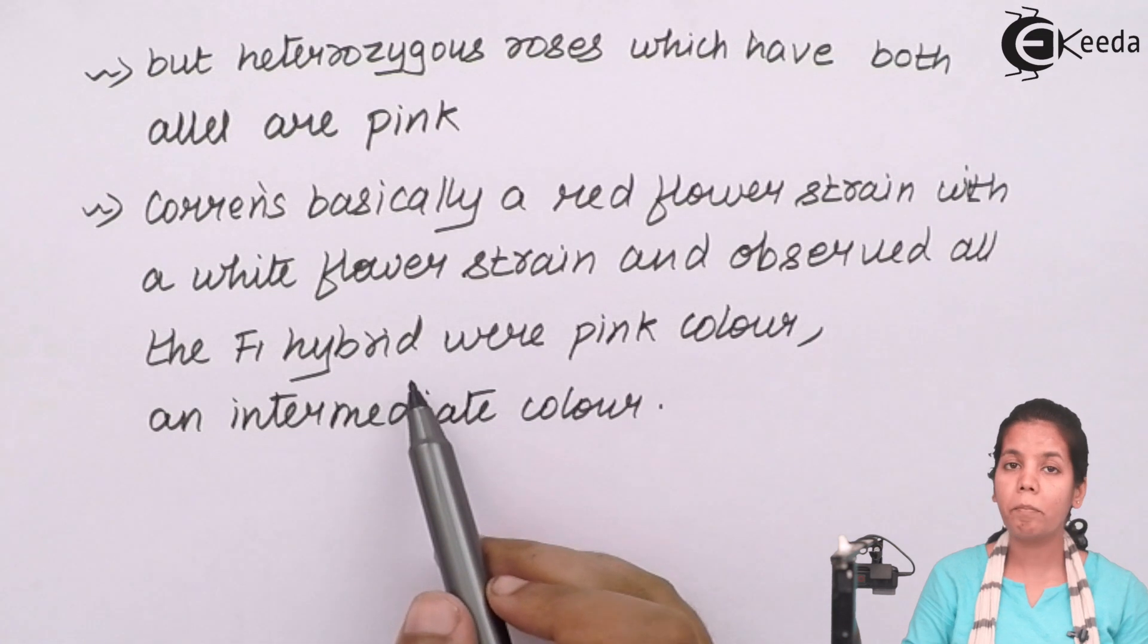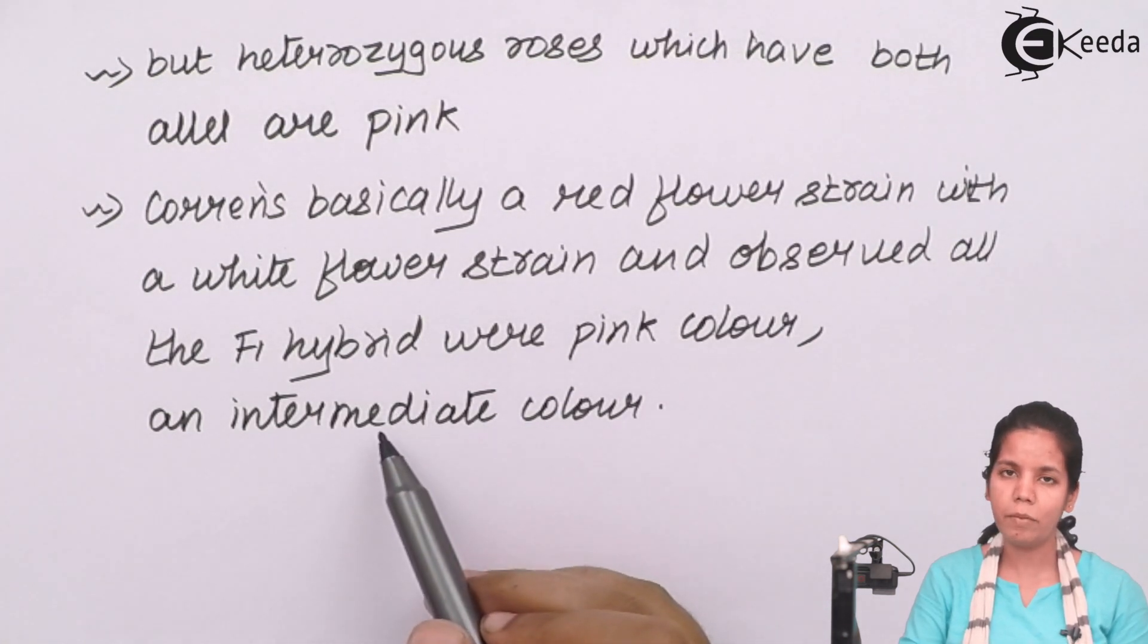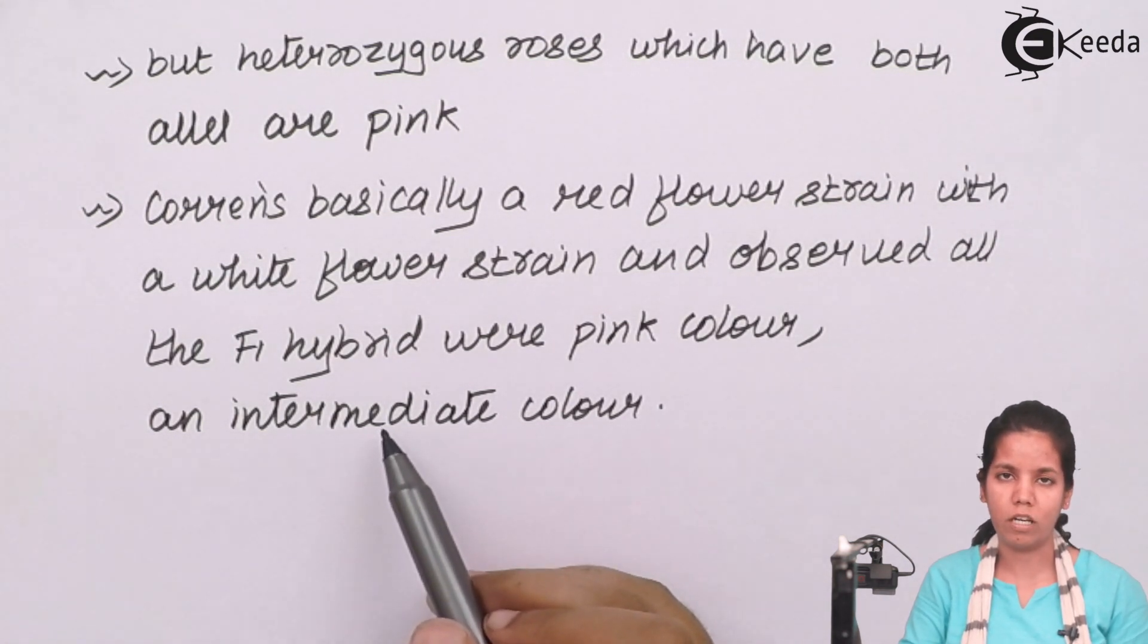The F1 hybrids were pink in color, and this pink in color is an intermediate color. When I say intermediate, it means somewhere in the middle. It is neither reddish nor whitish in color.